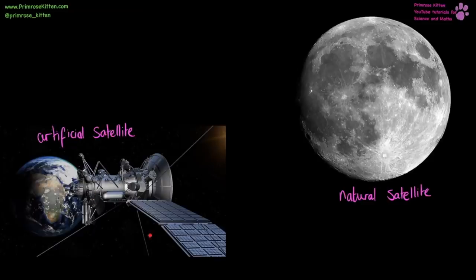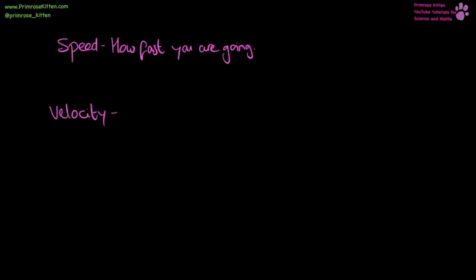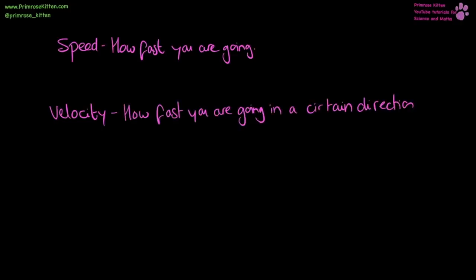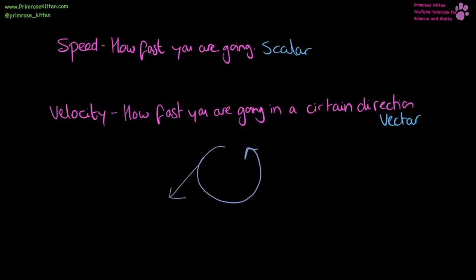An artificial satellite is something we've put into space to orbit the Earth, whereas a natural satellite is something like the Moon which naturally orbits the Earth. Satellites maintain their orbit due to gravity. There is a key distinction between speed and velocity: speed is how fast you are going (scalar), velocity is how fast you are going in a certain direction (vector). If something is going in a circle, it can be at a constant speed but constantly changing direction, which is why you can have a change in velocity while going at the same speed.